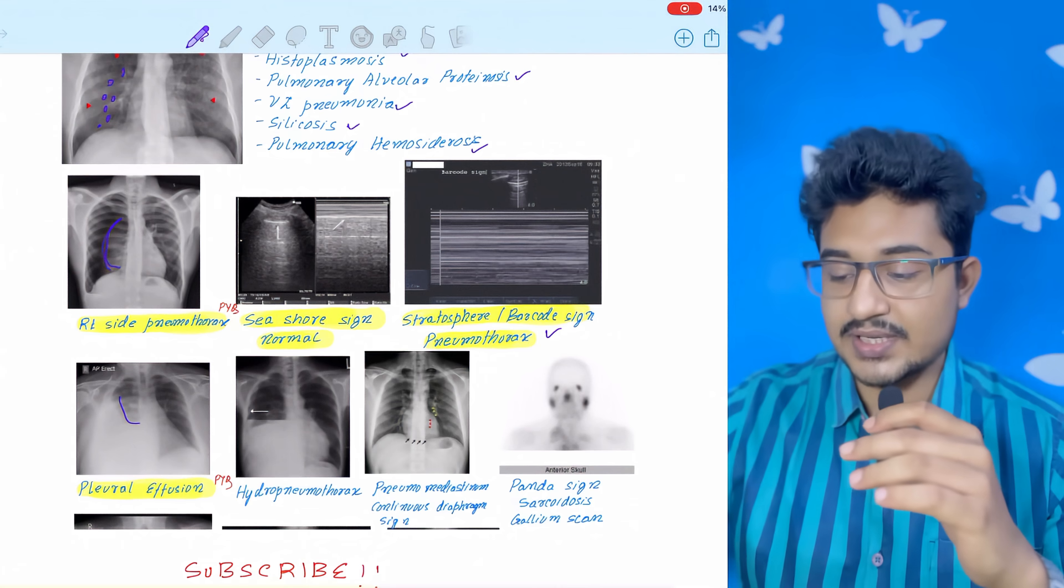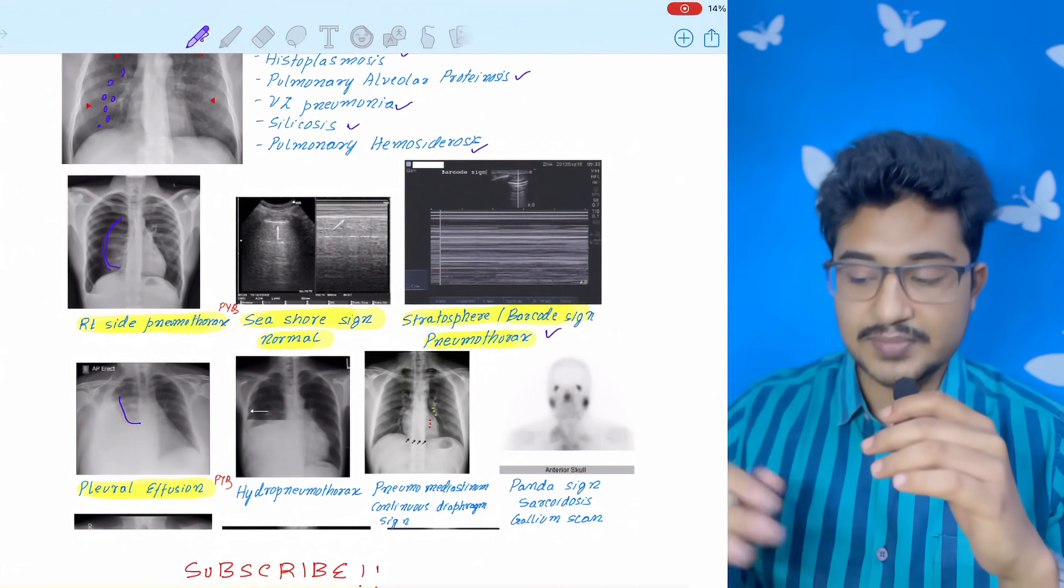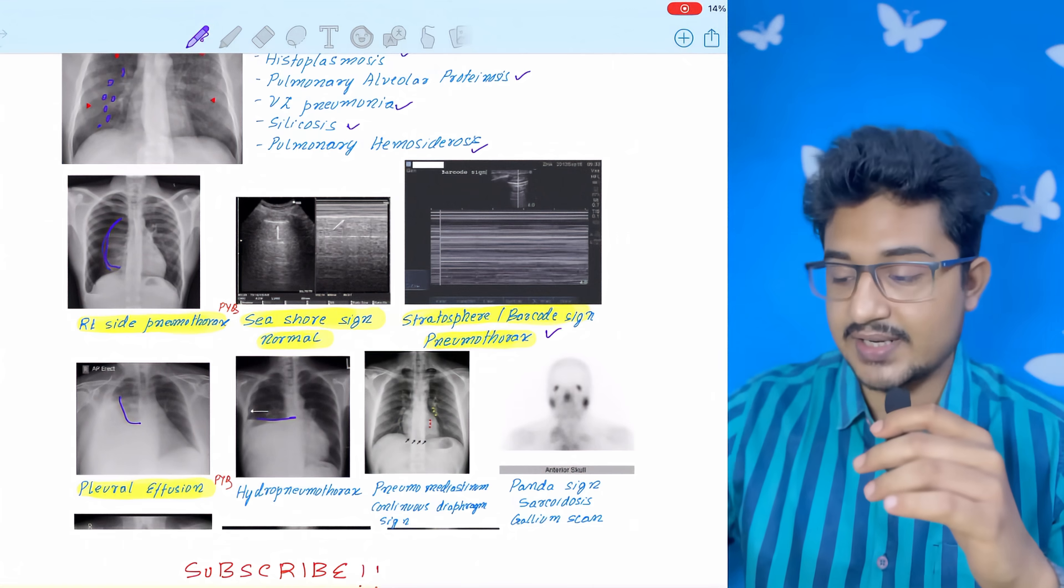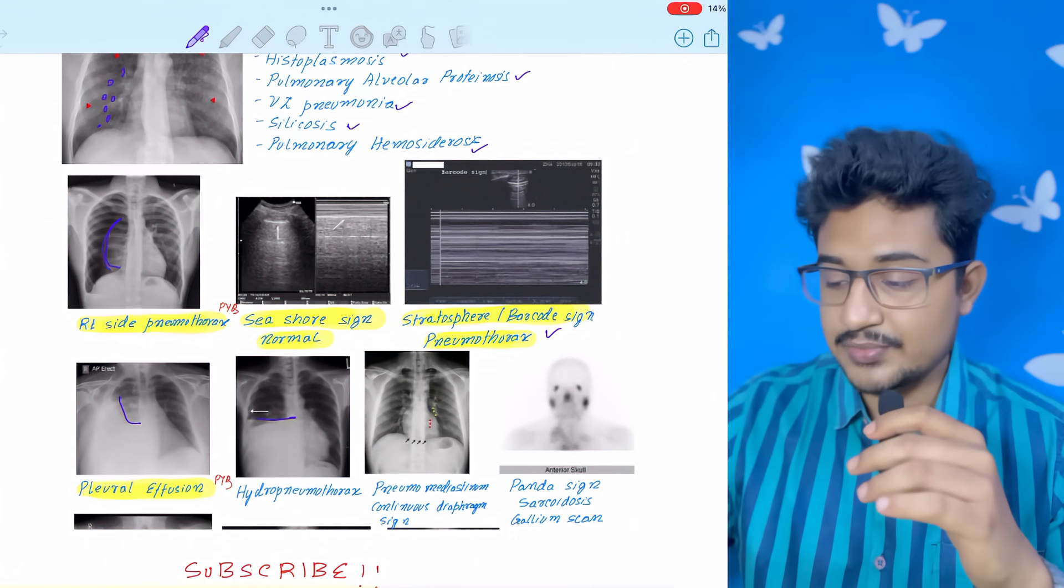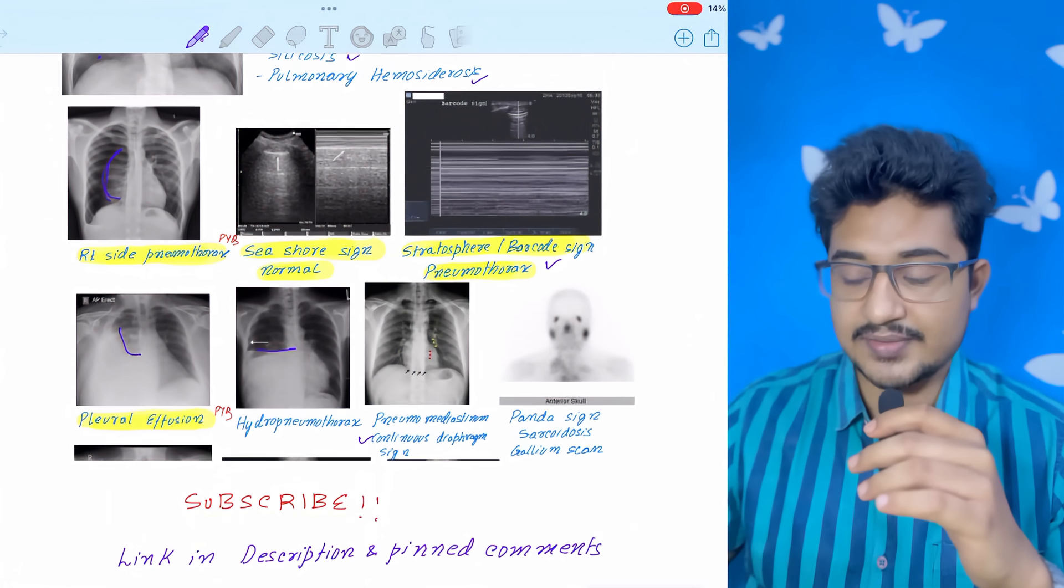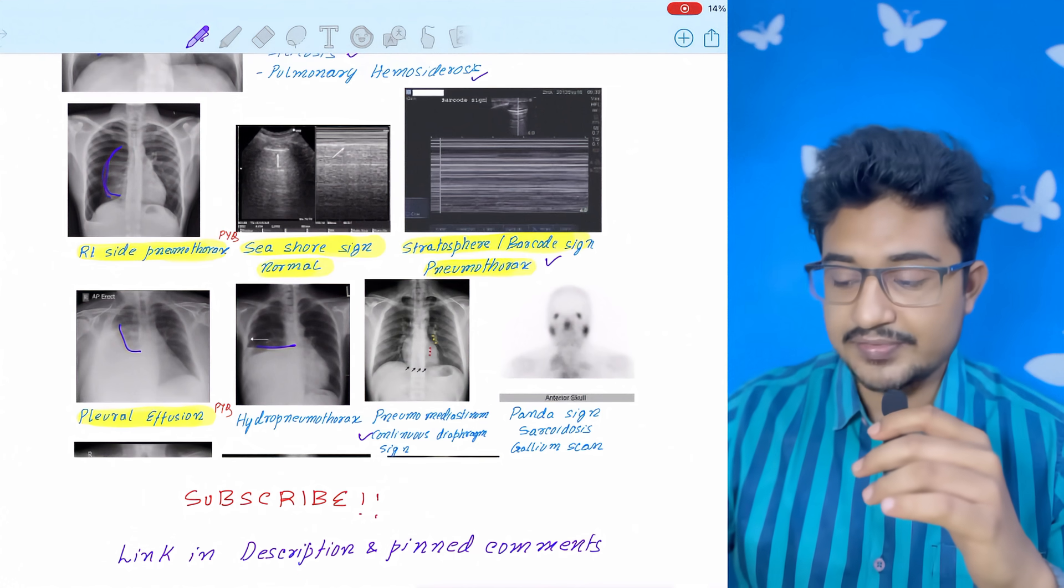Pulmonary effusion: you can see the meniscus sign. But in hydropneumothorax there is a straight line. In pneumomediastinum you can see the continuous diaphragm sign.